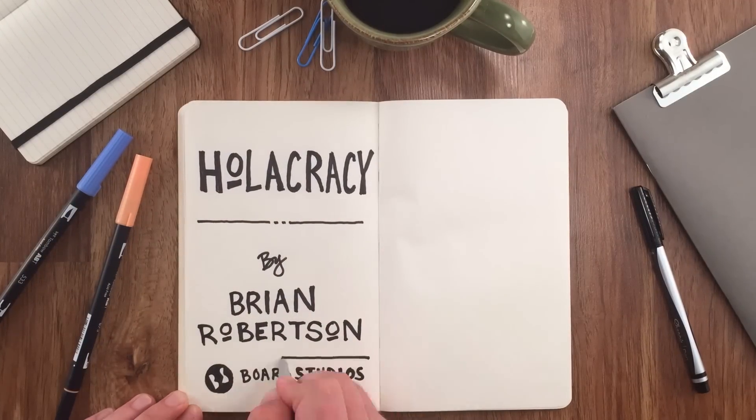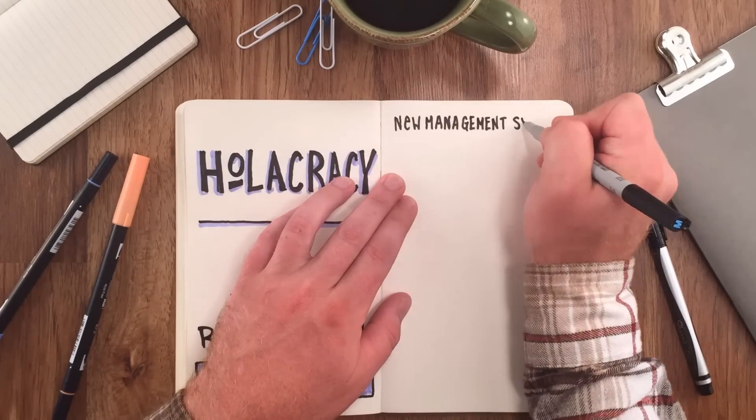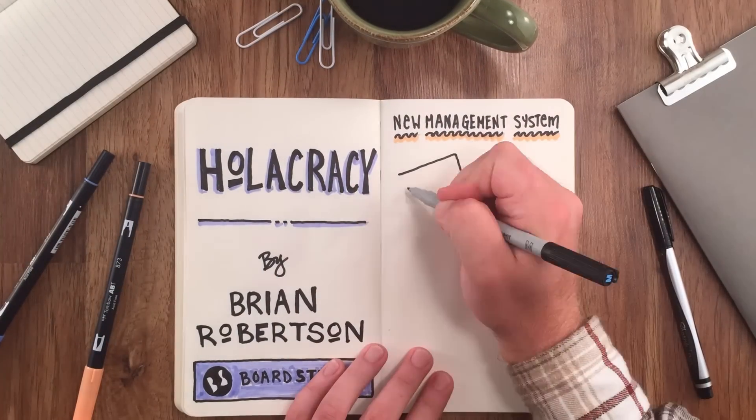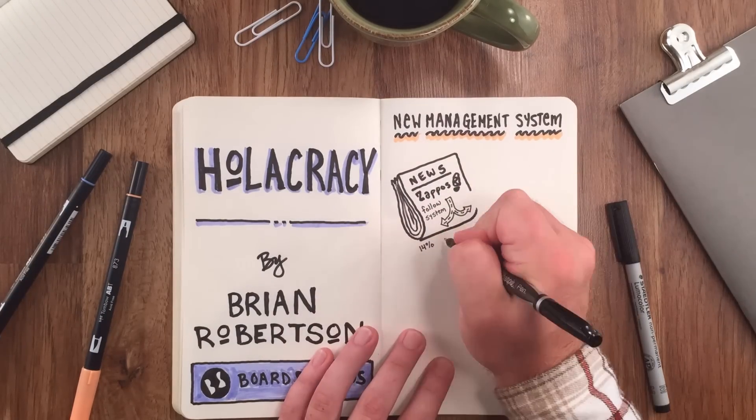Holacracy by Brian Robertson. The new management system that made headline news when Zappos asked that all its employees follow the system or take a pay to resign, and 14% of the employees took the option to leave.